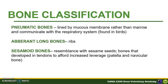Other minor classifications include the pneumatic bone, aberrant long bone, and the sesamoid bone. Pneumatic bones are bones with air spaces in them; these include certain bones of birds, however these bones are absent in dogs. Some literature classifies ribs separately, thus they are classified as aberrant long bones. Sesamoid bones look like sesame seeds — these are bones that develop in tendons to afford increased leverage. Examples are the patella and the clavicular bone.